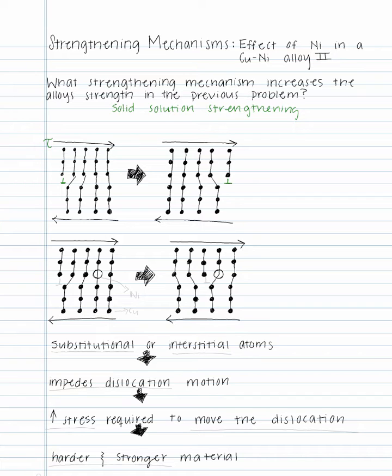The second image portrays nickel atoms in a copper lattice blocking dislocations from moving as easily. To break this down,